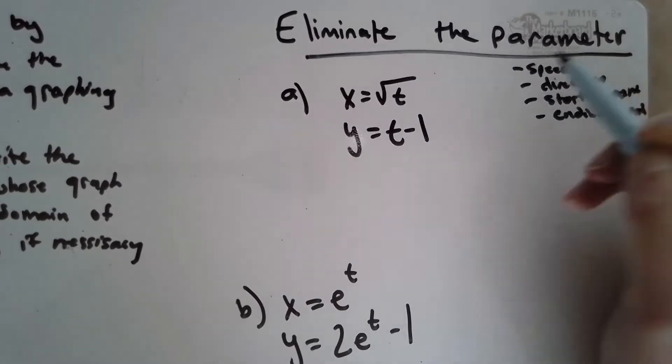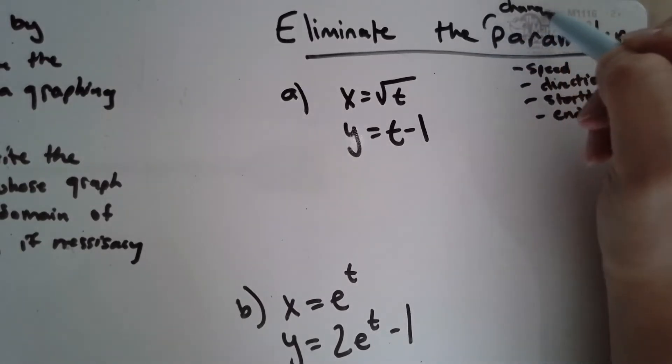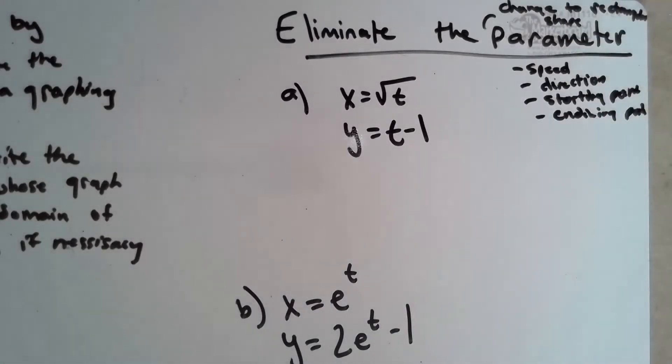Okay, and we're going to change these by—when it says eliminate the parameter, it means change to rectangular, which is just going to give us shape.